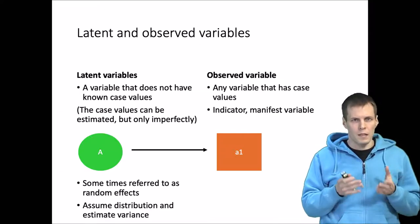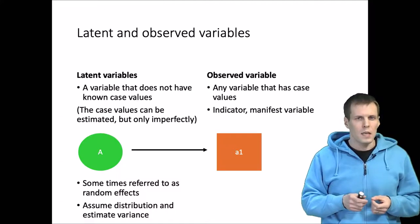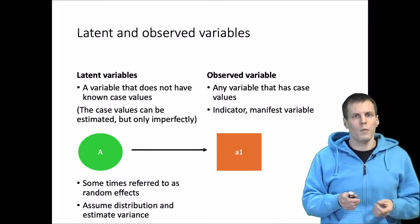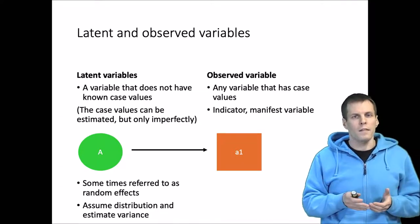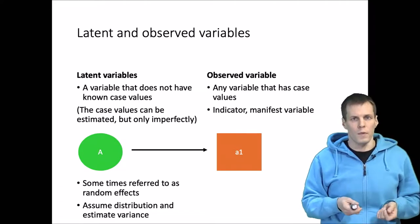During estimation of a statistical model, we actually don't use the case values. Instead, we assume a distribution for the variable—typically assume that the distribution is normal—and then we estimate the variance of that normal distribution, assuming that the mean is zero.